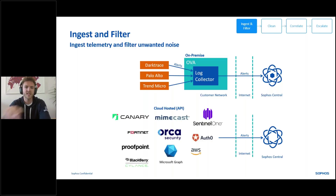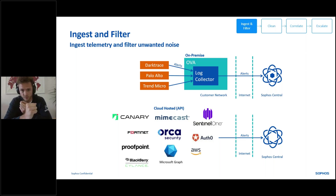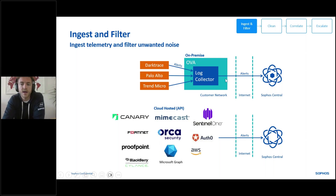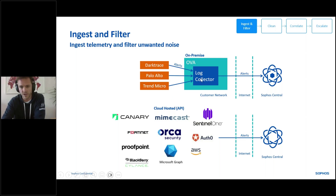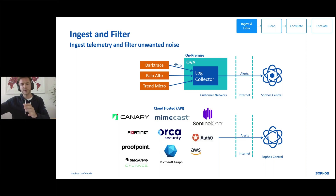Ingest and filter — probably the most boring stage, but a very important one. How do we get the logs into us? There are two primary high-level ways. One: is the customer tool on-prem or cloud-hosted? On-prem requires spinning up a VM on the customer network, deploying an OVA that contains basically a Syslog server — our log collector. You go to your Palo Alto, set up a Syslog forwarding rule, it sends logs into our OVA right into that VM, and then it forwards onto the cloud into our Sophos Central data lake.